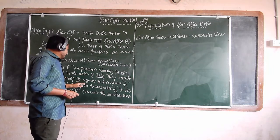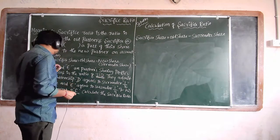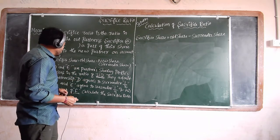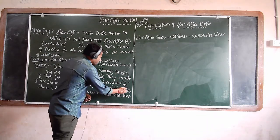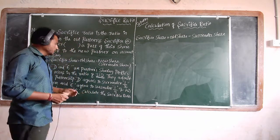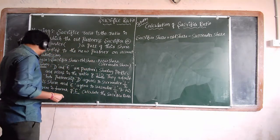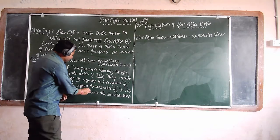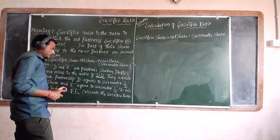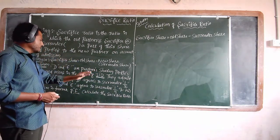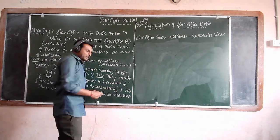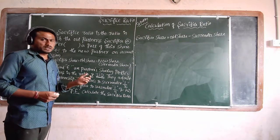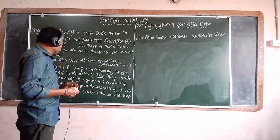D agrees to surrender 1 by 2 of his share, so D's sacrifice is 1 by 2 of 3 by 5. E agrees to surrender 1 by 4 of his share, so E's sacrifice is 1 by 4 of 2 by 5.